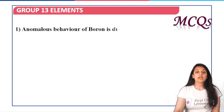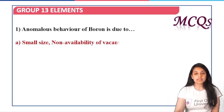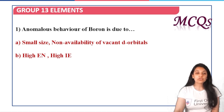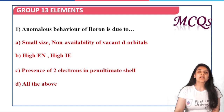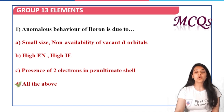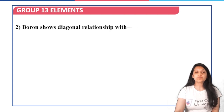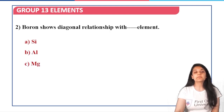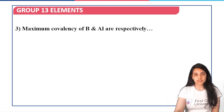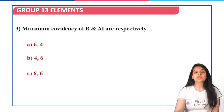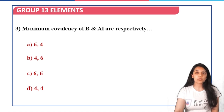Concept check: The anomalous behavior of boron is due to small size, non-availability of vacant d orbitals, high electronegativity, high ionization energy, and presence of two electrons in the penultimate shell — all five reasons are given, so option D is correct. Boron shows diagonal relationship with silicon, so option A is correct. The maximum covalency of boron and aluminum are respectively 4 and 6, due to non-availability and availability of vacant d orbitals — option B is correct.